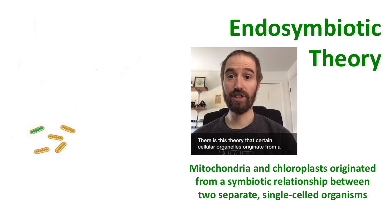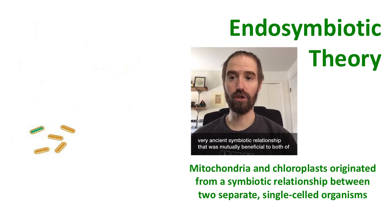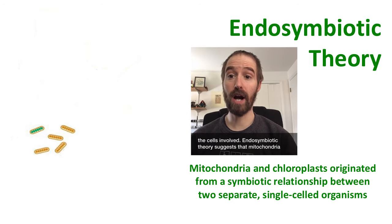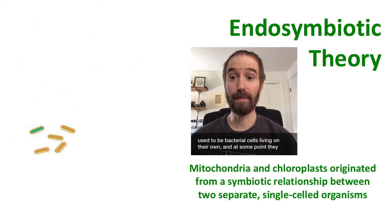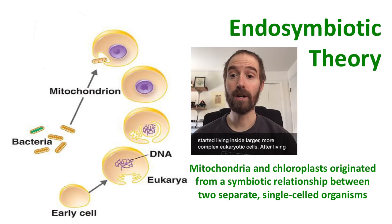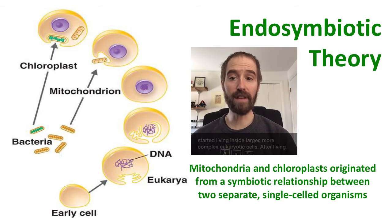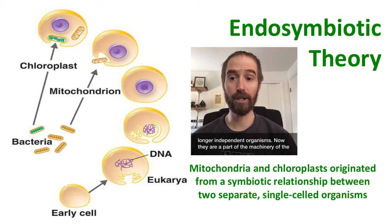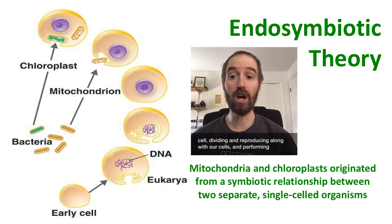There's this theory that certain cellular organelles originate from a very ancient symbiotic relationship that was mutually beneficial to both of the cells involved. Endosymbiotic theory suggests that mitochondria and chloroplasts originated as free-living, independent organisms. They used to be bacterial cells living on their own, and at some point they started living inside larger, more complex eukaryotic cells. After living this way for so long, they lost their ability to live on their own, and are no longer independent organisms. Now they are a part of the machinery of the cell, dividing and reproducing along with our cells, and performing functions vital to sustaining life.